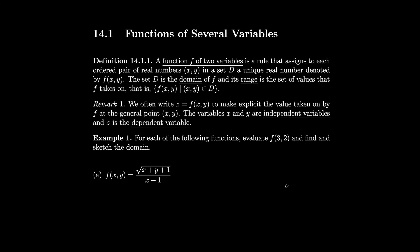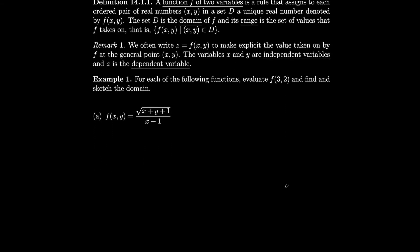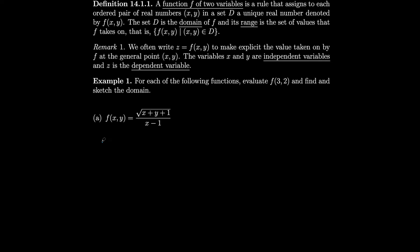As an example, let's evaluate f(3, 2) and find and sketch the domain for a couple of functions. We just plug in 3 for x and 2 for y. We get f(3, 2) equal to the square root of (3 + 2 + 1) over (3 − 1), which is the square root of 6 over 2. Evaluating multivariate functions is pretty much the same as single univariate functions.